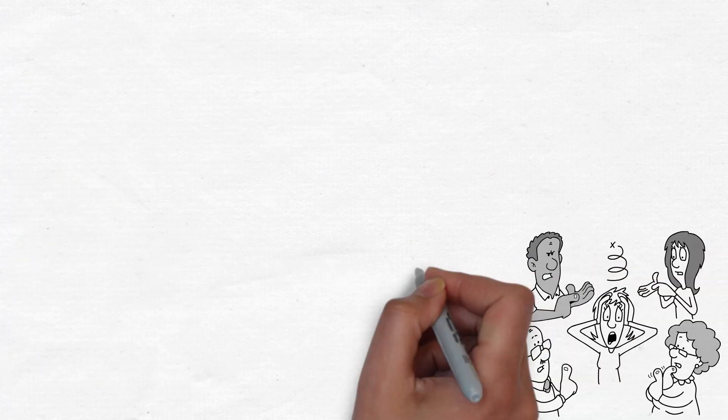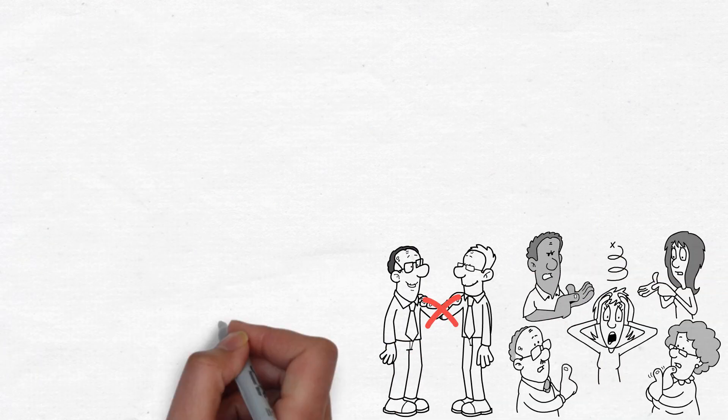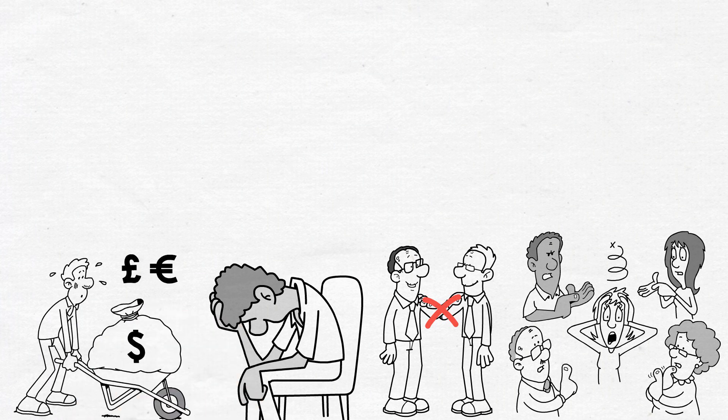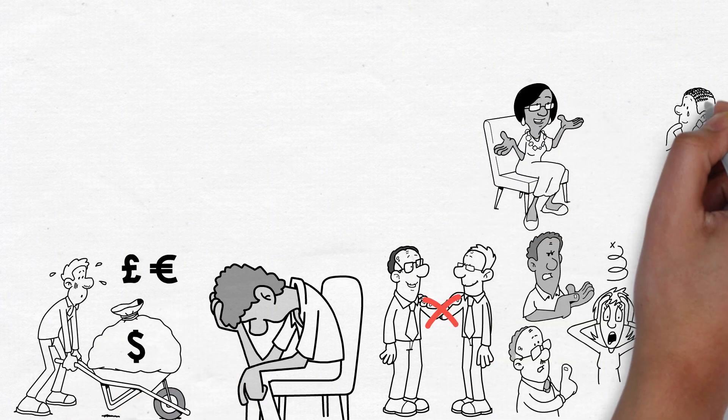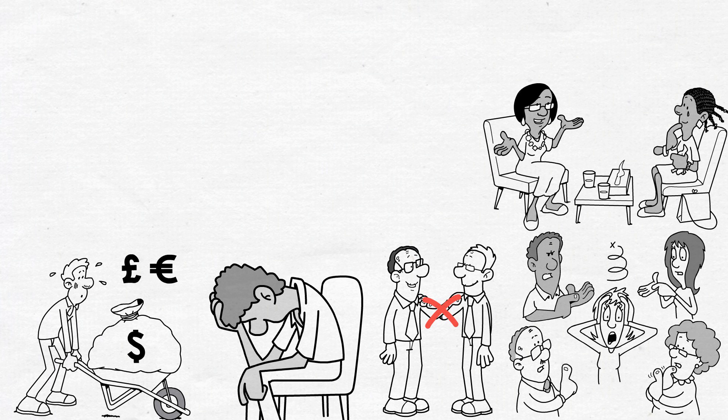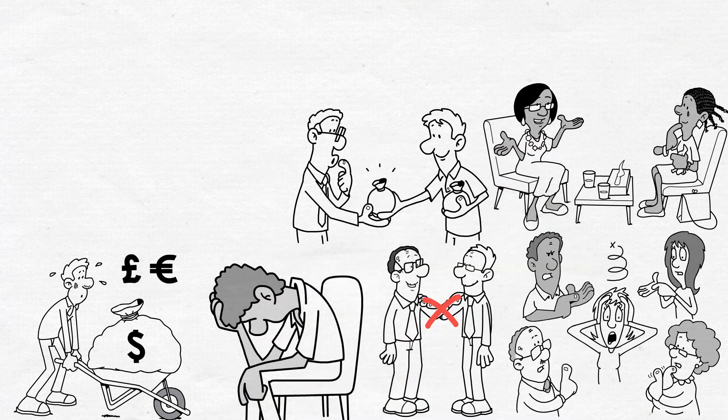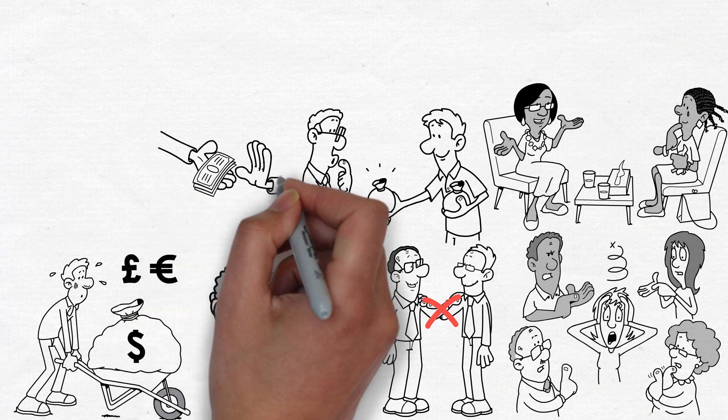No matter what they do, some people will see rich people as cheap. There's no appeasing the envious. Even if you're an exceptionally generous person who believes in giving money away to others and assisting others, it doesn't take much for you to be perceived as cheap.